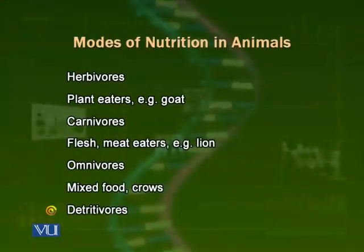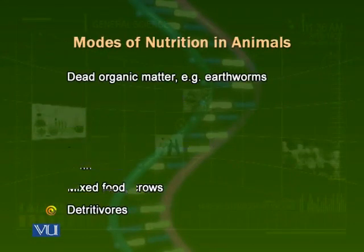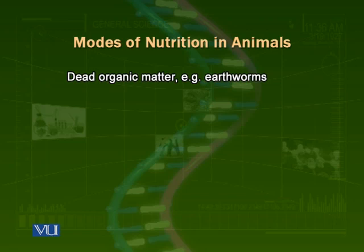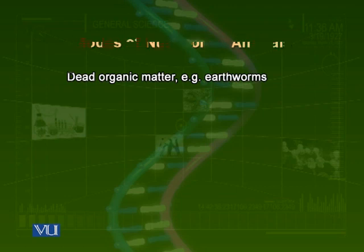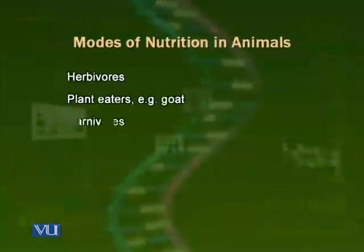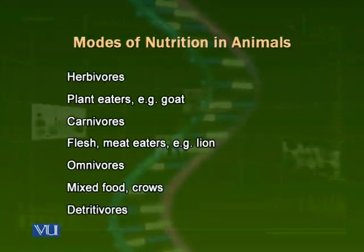Then there is the category called detritivores or decomposers. These are organisms which eat up dead organic matter. For example, the earthworm lives inside the upper layer of soil and eats dead organic matter, breaks it down, and acquires energy from it. So there are four modes of nutrition in animals: herbivores, carnivores, omnivores, and detritivores.